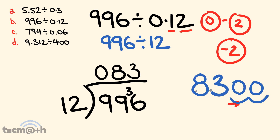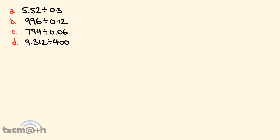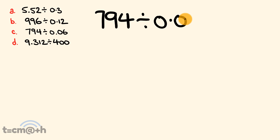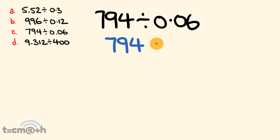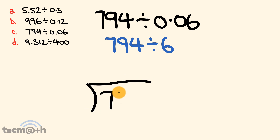So 996 divided by 0.12 is 8300. For our third example we have 794 divided by 0.06. The same rules apply — we first divide as if there are no decimals, so that's 794 divided by 6.